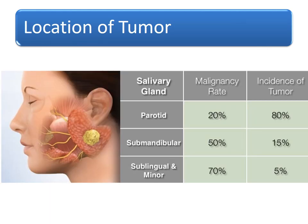Usually there are three major salivary glands: parotid, submandibular, and sublingual. The majority of tumours are benign and usually involve the parotid gland.